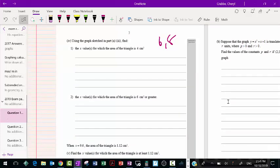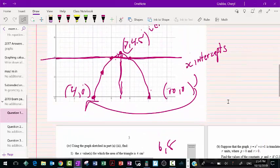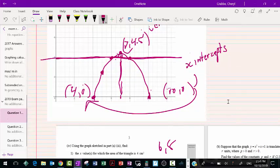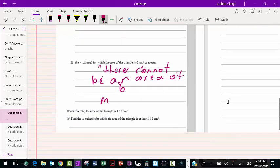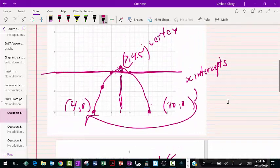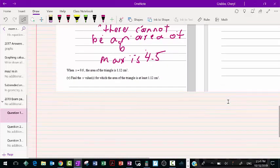The x value for which the area of the triangle is 6. Well, the area of the triangle, if you understand, the maximum point is at 7 and 4.5. I can't get an area of 6. There cannot be an area of 6. The max area is at 4.5. That's just understanding what the parabola, the context of the parabola is telling you, and showing you that you have an understanding around that.